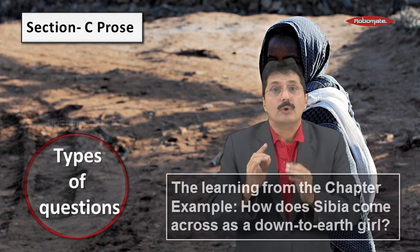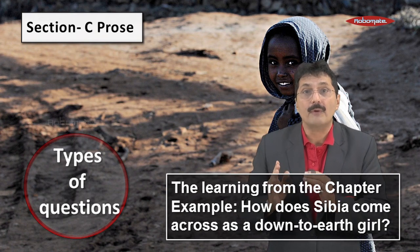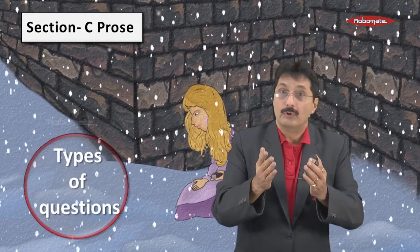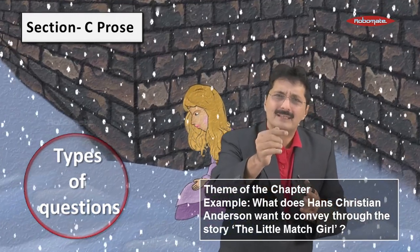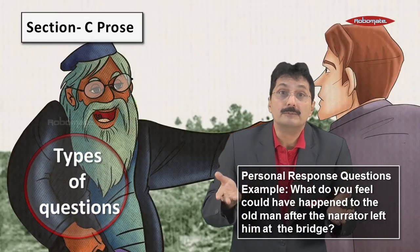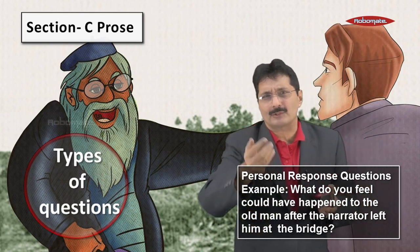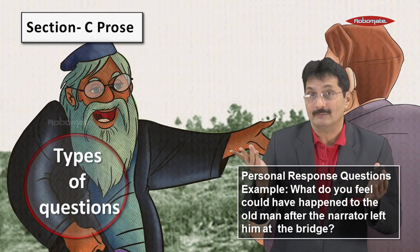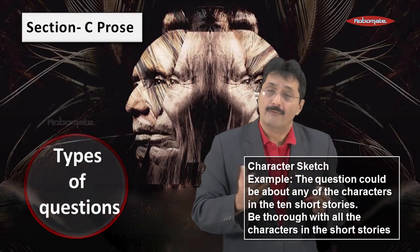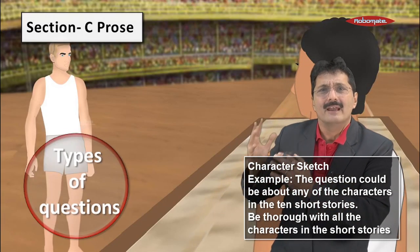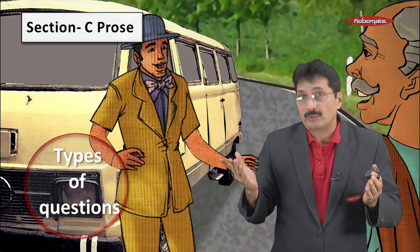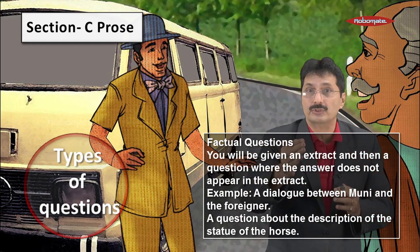Let's look at Section C — the Prose section. Questions may be about learnings from a chapter, for example from 'The Blue Bead': how does Sibia come across as a down-to-earth girl? It could be the theme of a chapter — what message does Hans Christian Andersen want to convey in 'The Little Match Girl'? It could be a personal response question — what do you feel could have happened to the old man after the narrator left him at the bridge? This is an open-ended question from 'Old Man at the Bridge.' Character sketch questions could be about any of the characters in the ten short stories, so be thorough with all characters.